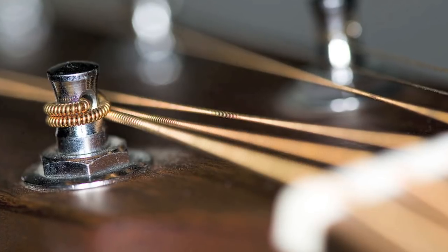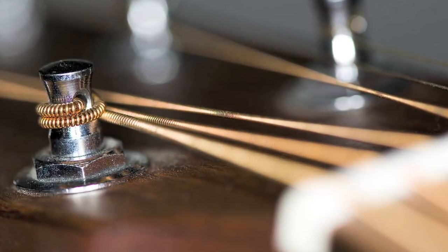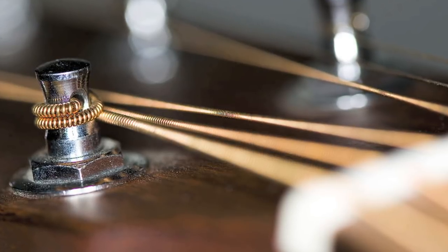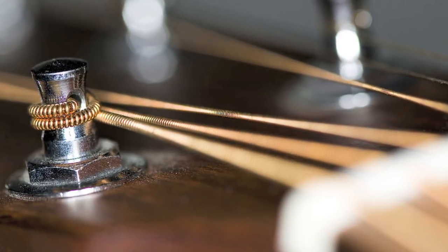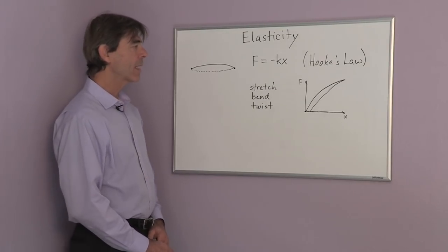An example would be a guitar string. When we pull on it, it vibrates. It goes back and forth between the two positions, the overcompensated position and the original position that you pulled it in.